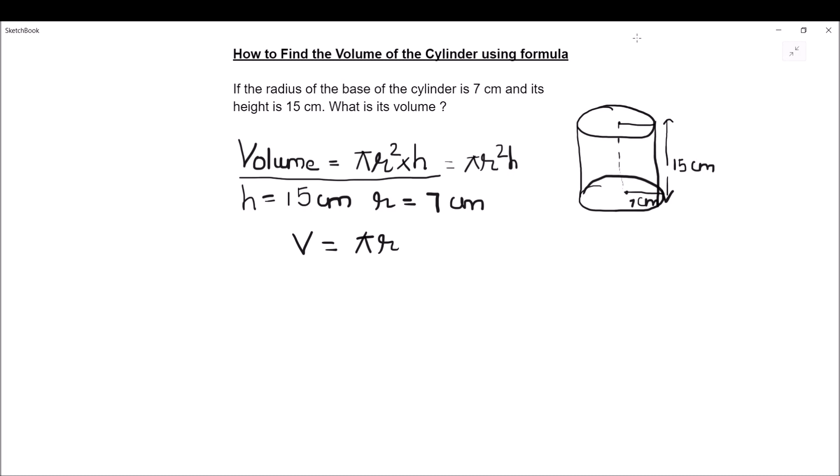So πr²h is equal to: π is 22 divided by 7, times r is given as 7 cm, so 7 times 7, and h is given as 15 cm. Now this 7 gets cancelled with the 7 in the numerator.